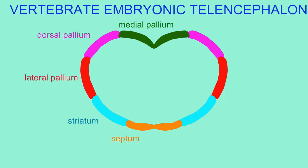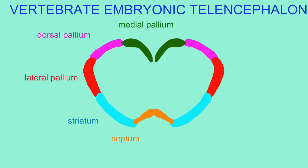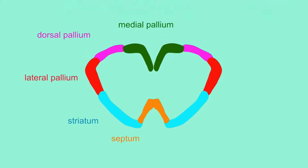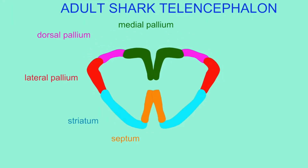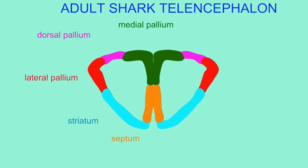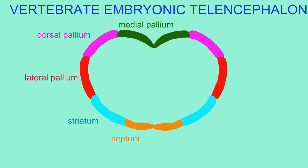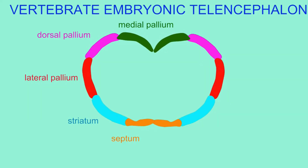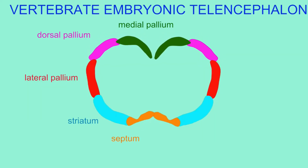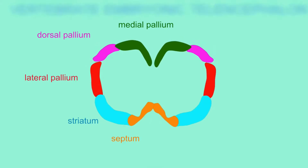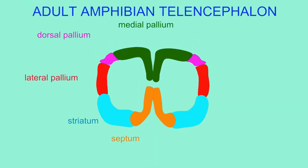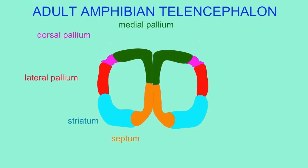In these animations, the septal region, or septum, is depicted in orange, and you can observe that this region goes back to the early vertebrates. It is part of the sub-pallium, so in the cerebrum, it is not part of the roof of the cerebrum, but is underneath that.